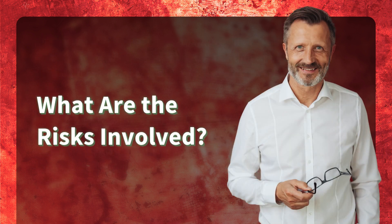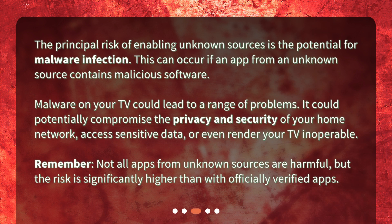What are the risks involved? The principal risk of enabling unknown sources is the potential for malware infection. This can occur if an app from an unknown source contains malicious software. Malware on your TV could lead to a range of problems — it could potentially compromise the privacy and security of your home network, access sensitive data, or even render your TV inoperable. Remember, not all apps from unknown sources are harmful, but the risk is significantly higher than with officially verified apps.